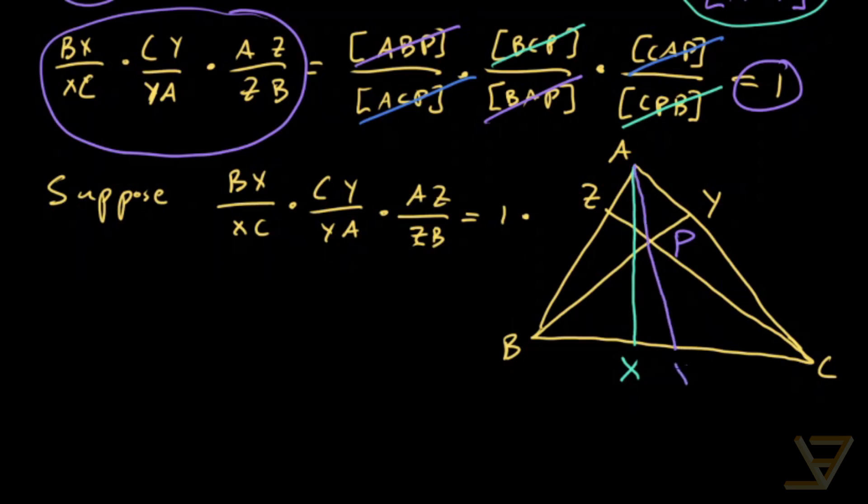And suppose we draw the Cevian that does go through P and through A. And we're going to say that hits BC at X prime. What we want is that X equals X prime. And that's what we're going to show. The phantom point is this X prime.